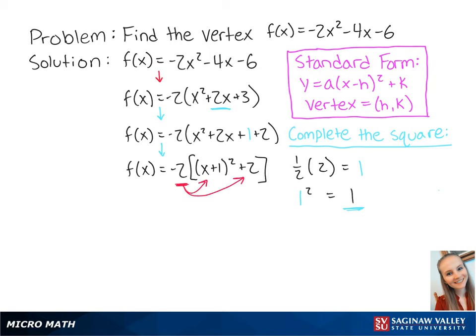Finally, we want to distribute the -2 to get us f(x) = -2(x + 1)² - 4.